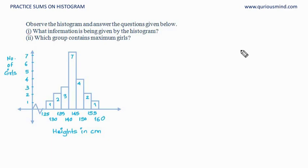So the information given by the histogram, if you see here, it is giving the number of girls in each height range. So number of girls in each height range, which means it gives the heights of the girls from class 7.